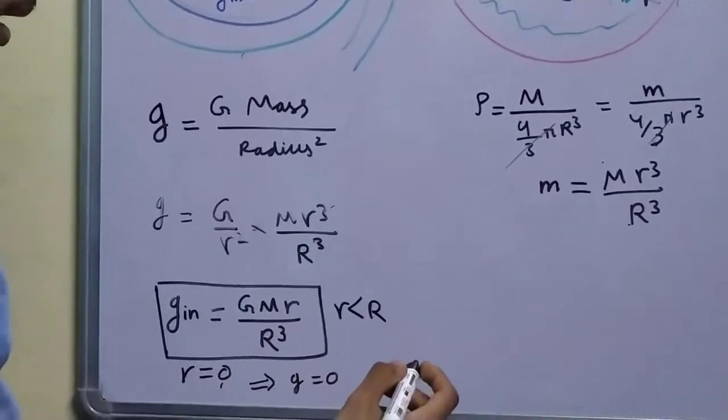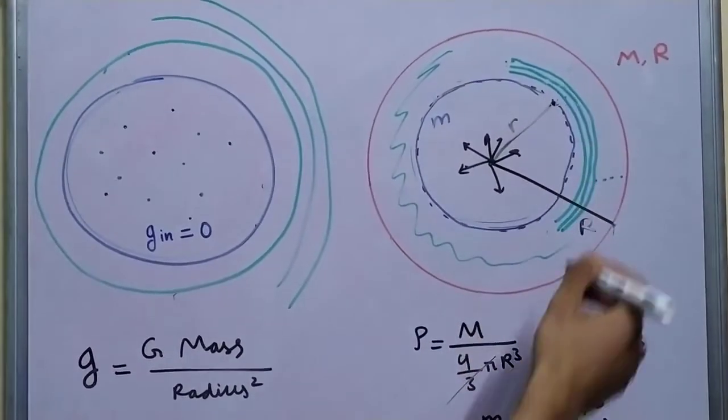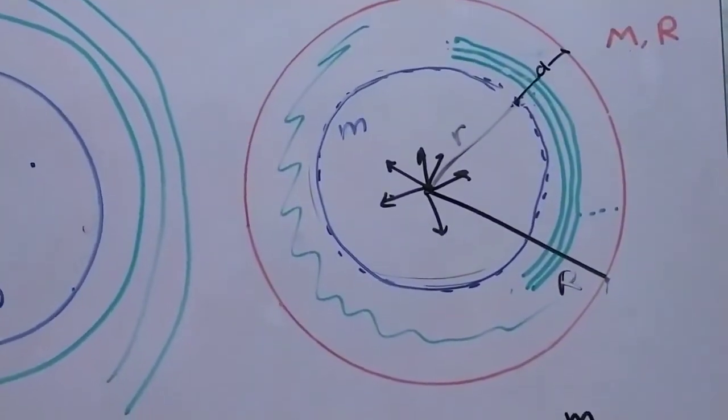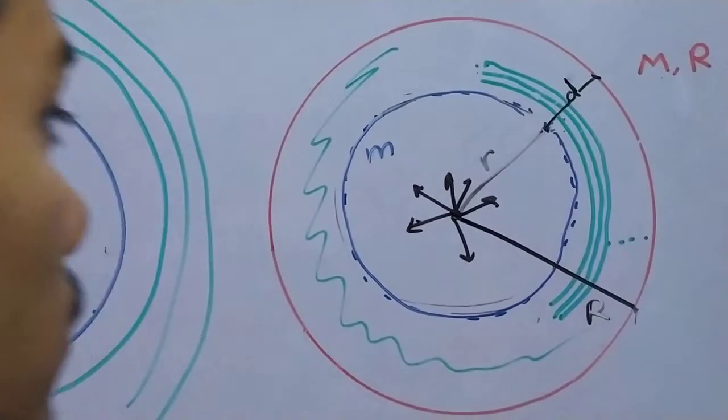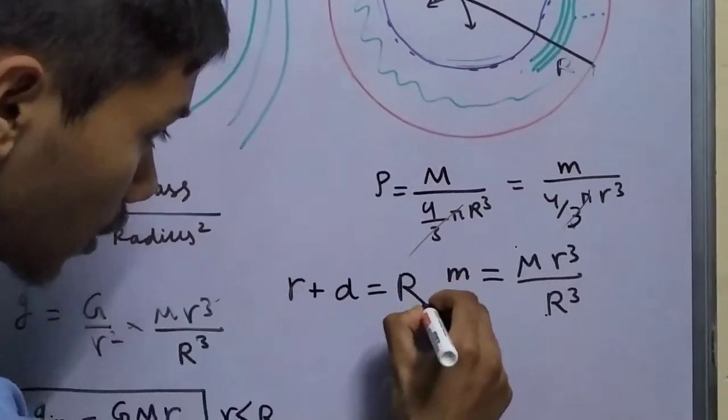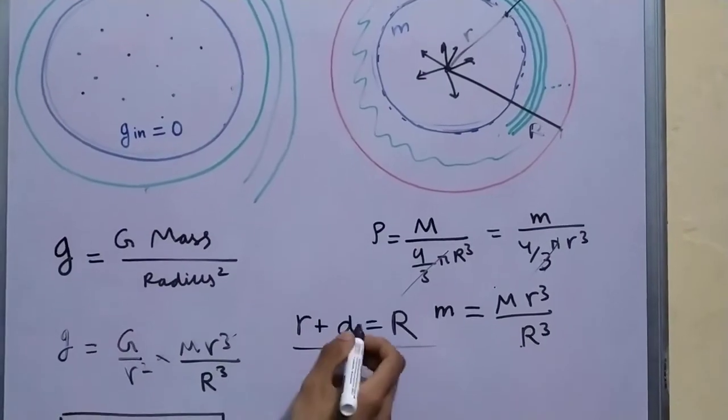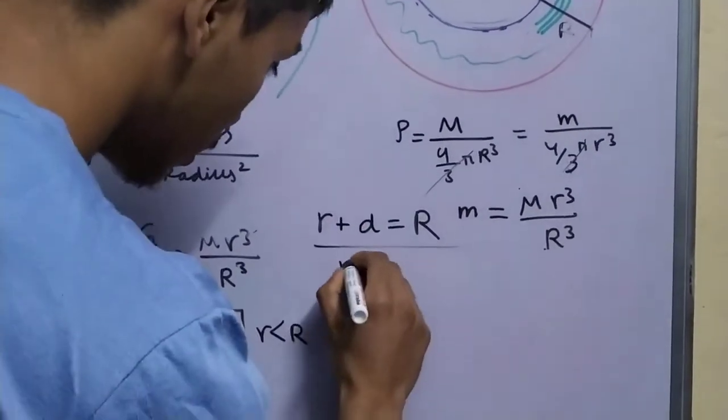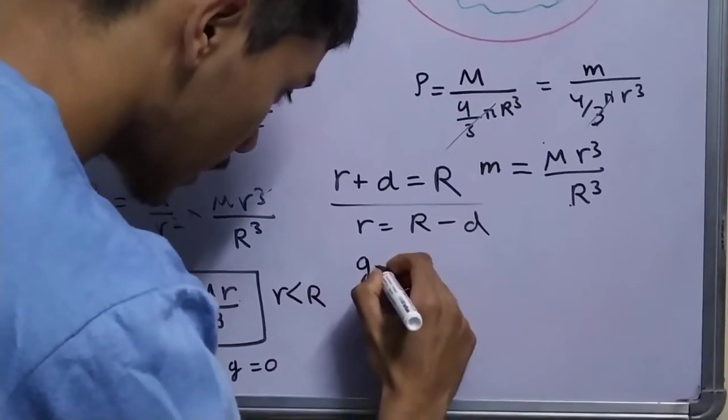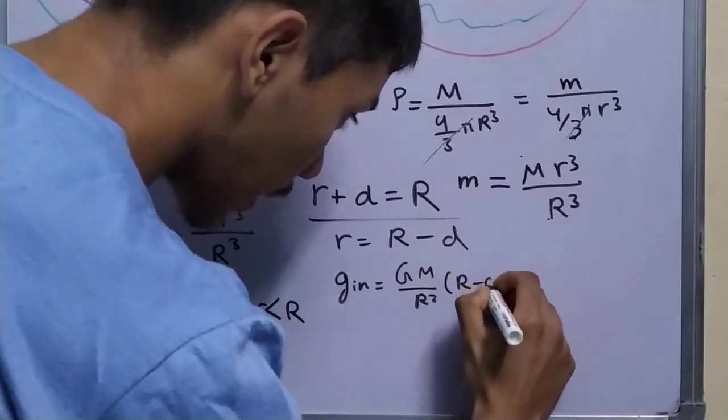Now another way to represent this point, the location of this point, is to measure the depth from its surface, capital D. We get r plus D as your radius, capital R. And we will just replace r in terms of D. So r will be capital R minus D. So your g inside will be equal to G m upon r cube times r minus D.